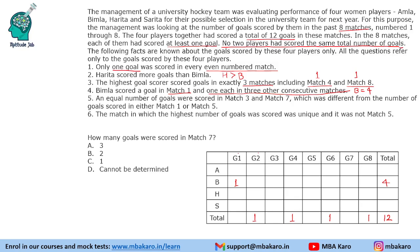Since Bimla has a total of 4 goals, Harita must have scored more — at least 5 or more. If Harita scores 5, the remaining 2 players share 3 goals (1 and 2 or 2 and 1). If Harita scores 6, we have 10 goals used and the other two would each score 1, but no 2 players can have the same total. So the only possible total for Harita is 5.